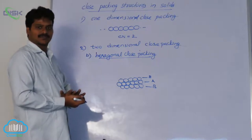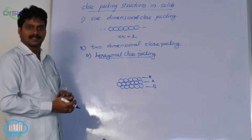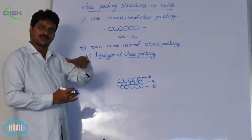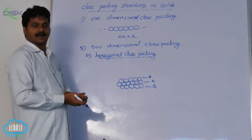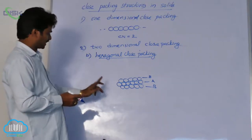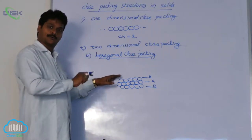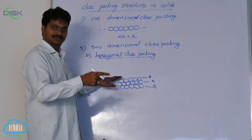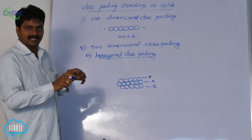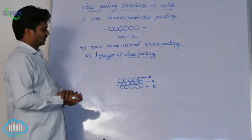Earlier we discussed square close packing. In square close packing, the rows of spheres are placed one over the other such that they are aligned vertically and horizontally both. But here, when we place spheres of one row over another row, the spheres of the second layer are exactly placed in the depressions of the first row.